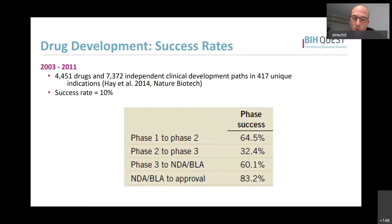One can of course say: animals are not humans, animal biology is not human biology, it is the best we have - and animal models do not completely match with human biology. So maybe a 10% success rate is not even that bad. And animal and preclinical research of course helps to make this number higher than it would be without it.